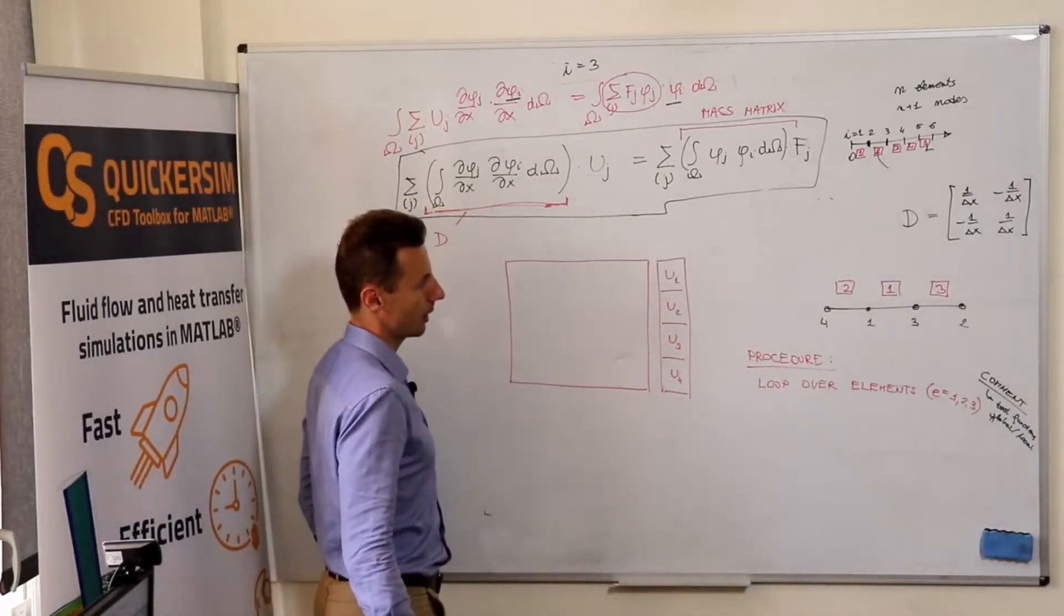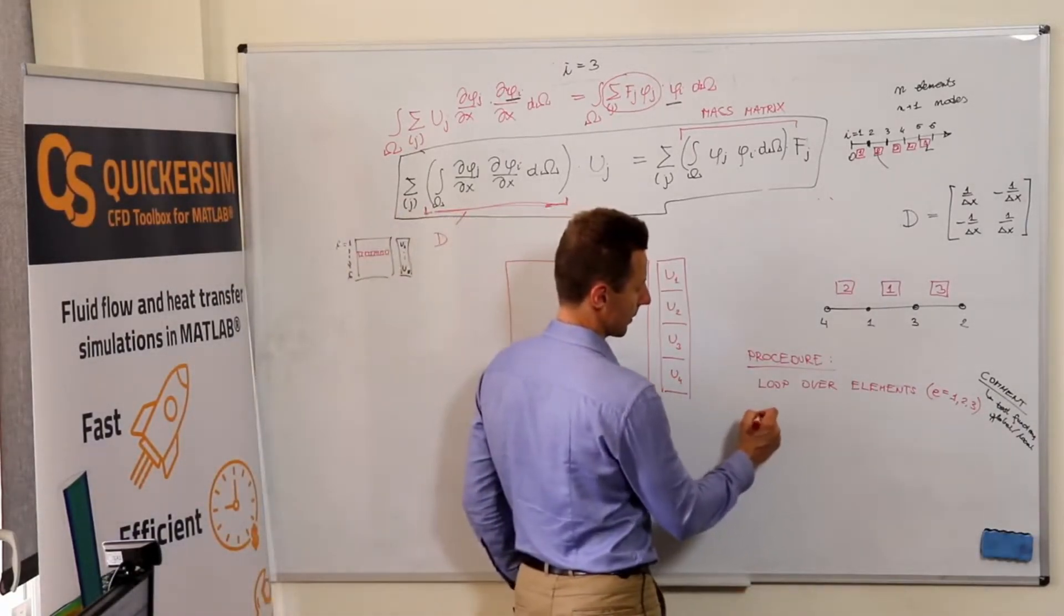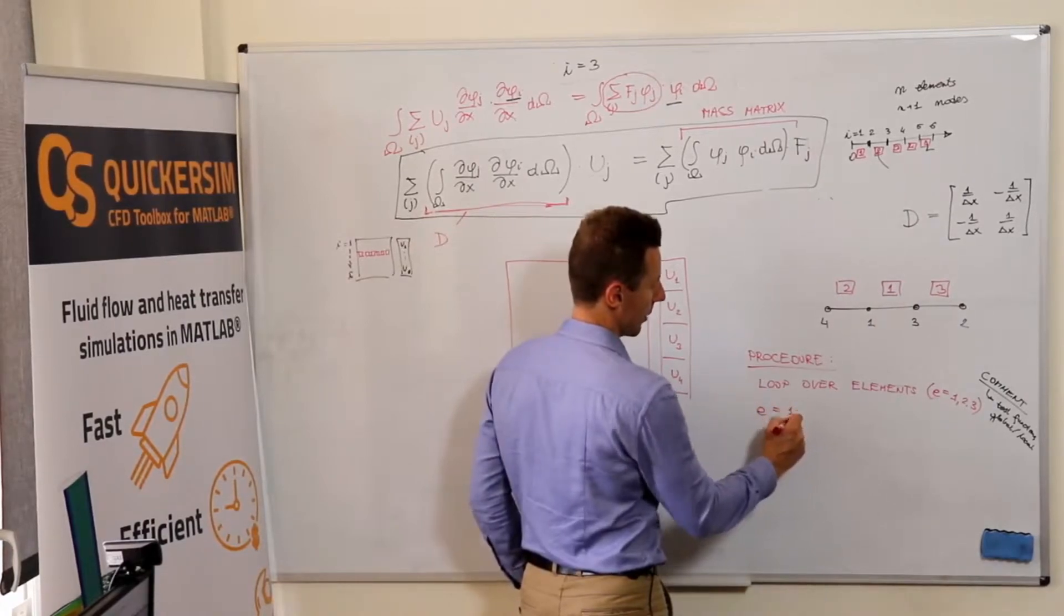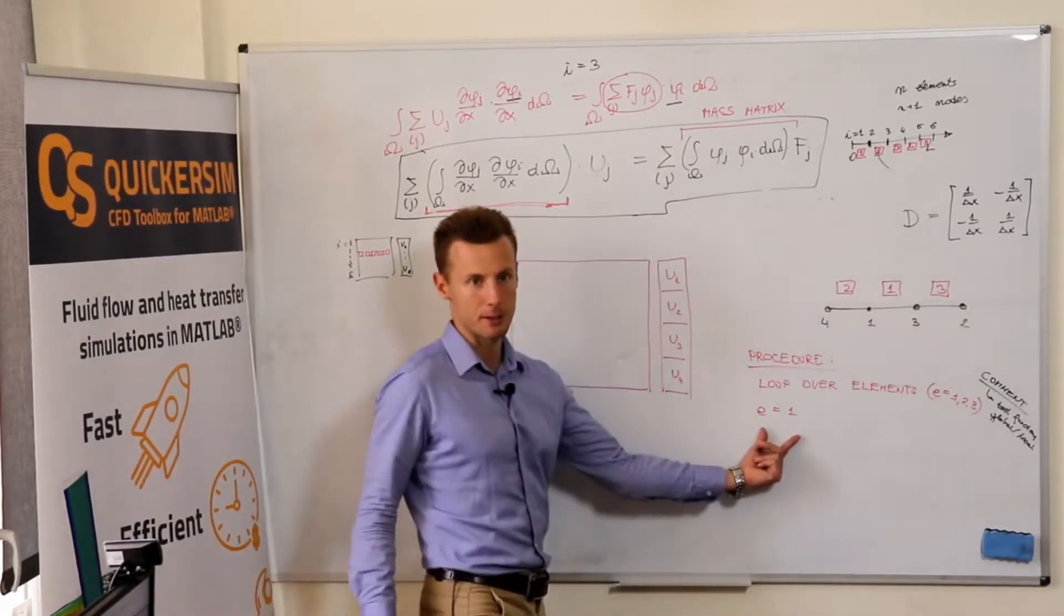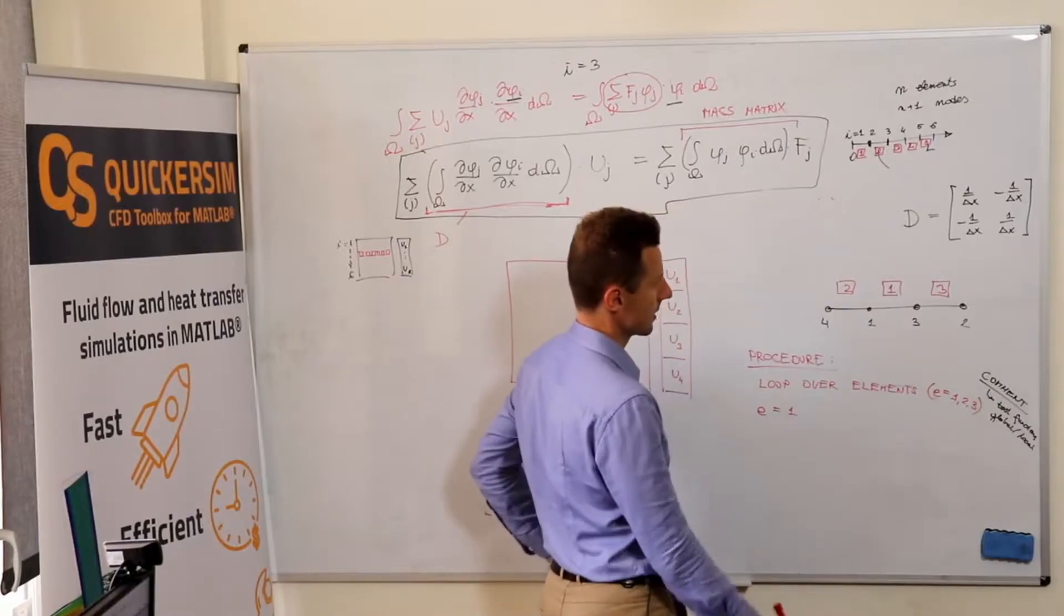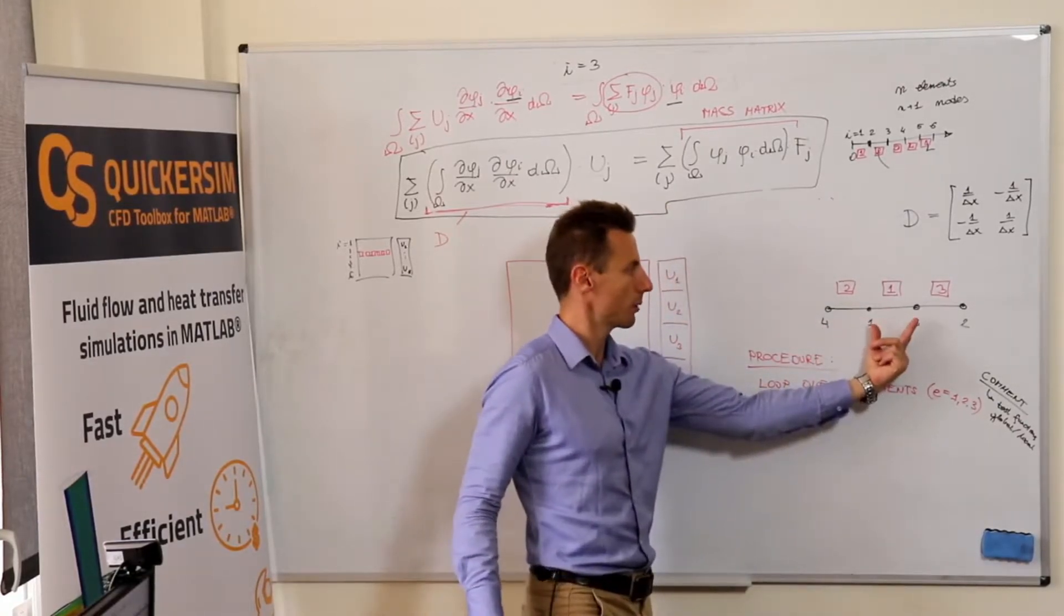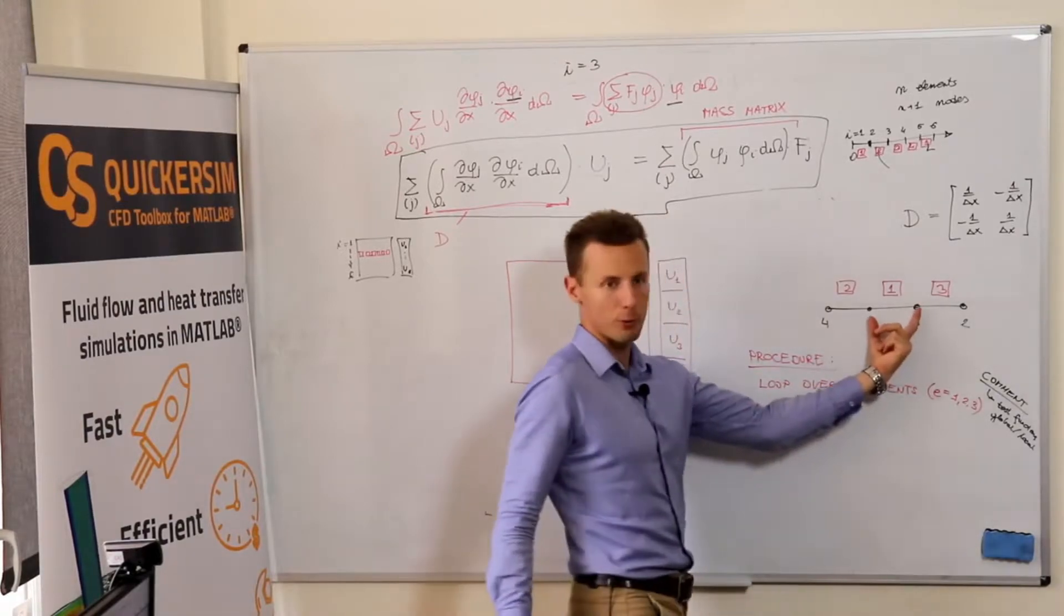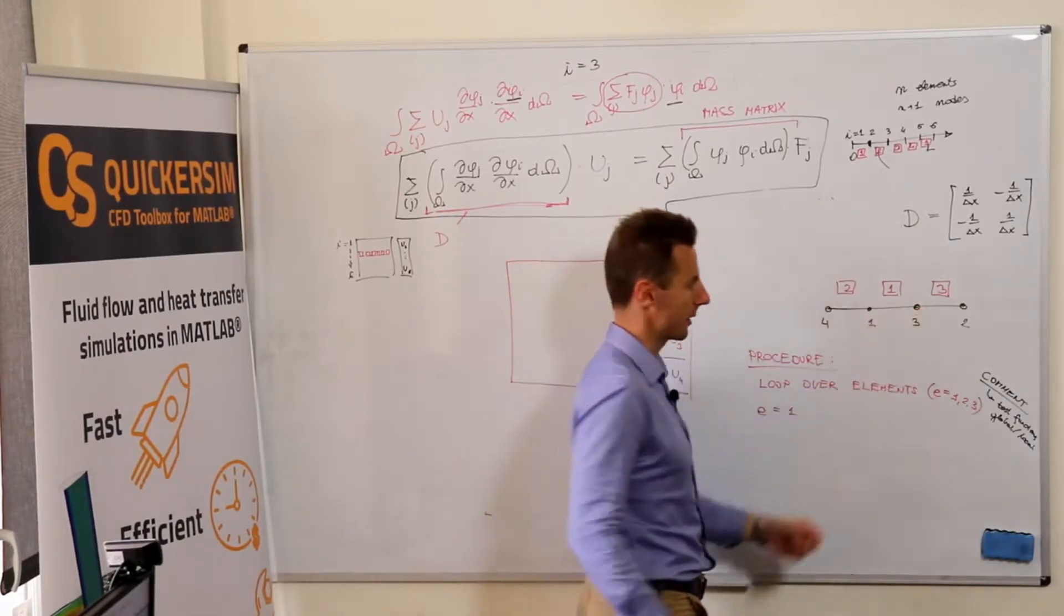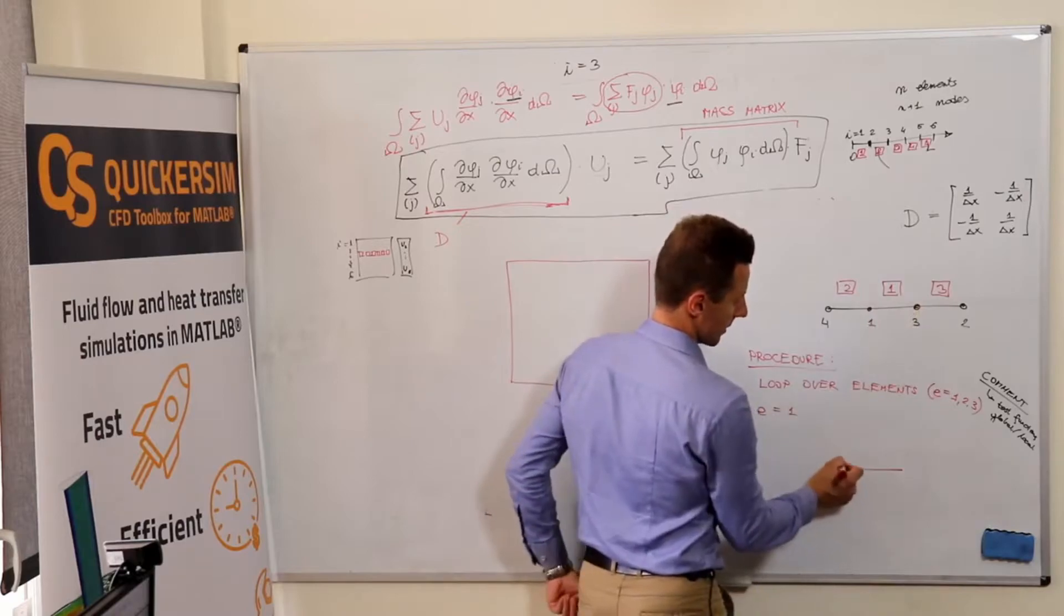And what we are doing, okay, once we've selected the element and we know right now our element index is one, let's see what it is. So we are looking at the mesh and then extracting this single finite element.